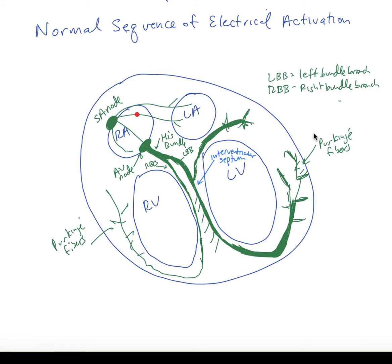It fires off action potentials that spread from the right atrium over to the left atrium and down to the atrioventricular node located right about here.